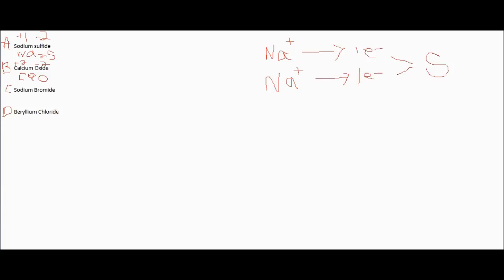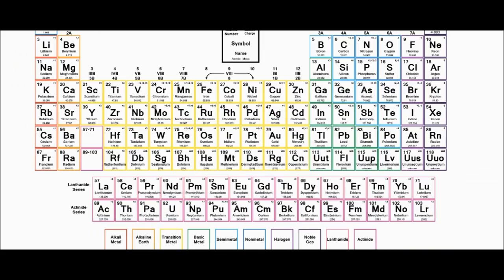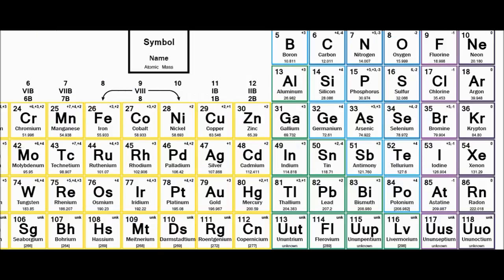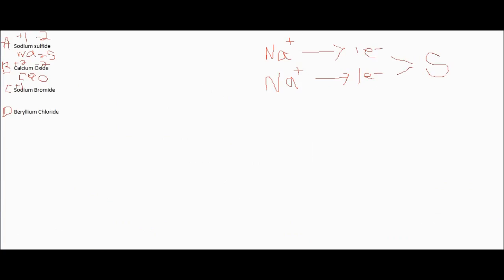Then we have sodium bromide. We already know sodium is Na, and it has the charge of plus 1 from our first question. But bromide has a charge of negative 1, so they combine in a 1 to 1 ratio again. We have NaBr.